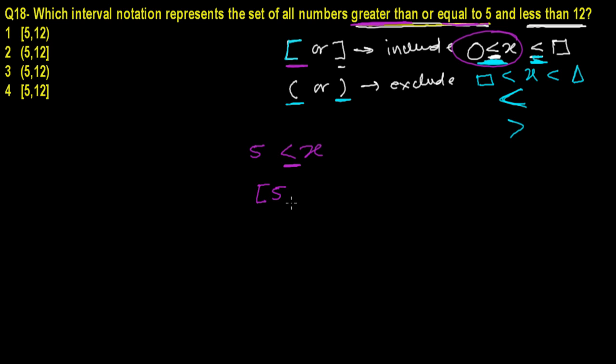Now let's read further: less than 12. So x is just less than 12, no equals sign, which means you give this parenthesis bracket. So you write 12 and give this bracket. Now see the matching—perfect, the first one. So this is our answer.